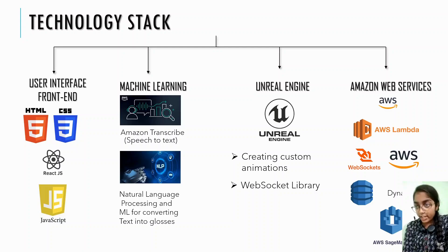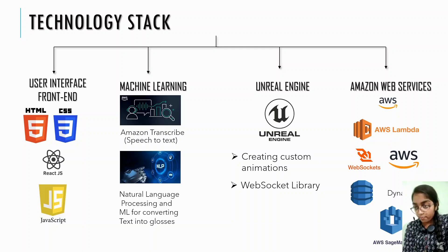In the second phase, which is the machine learning part, we will be using Amazon Transcribe and NLP. Amazon Transcribe is a speech-to-text service provided by AWS. It uses advanced machine learning algorithms to automatically transcribe audio to accurate text. NLP stands for natural language processing. It focuses on enabling machines to understand and interpret text, and is used to handle gloss and stop words in this project. We can also be training the model using a dataset.